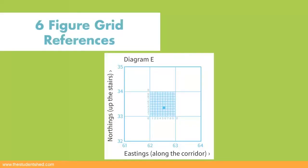To read a six-figure grid reference, we must first find the four-figure grid reference in which the place that we're looking for lies.